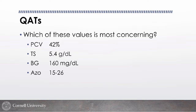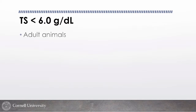We place an IV catheter and get a quick assessment: PCV, total solids, blood glucose, and BUN/creatinine. The most concerning value in context is the total solids. In an adult animal I expect total solids in the mid-sixes to mid-sevens. Normal ranges are broad at 5.5–8.5, but the majority cluster in the middle. When I get an adult animal presenting acutely ill with a low total solids, I get worried about acute hemorrhage — that's a big thing to miss.